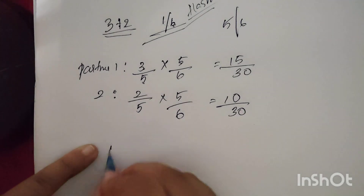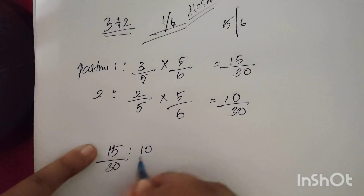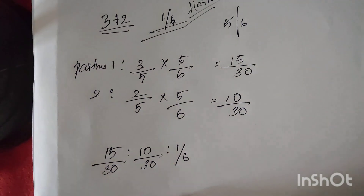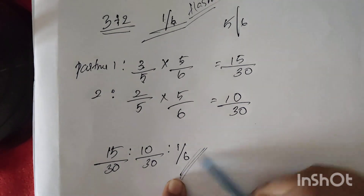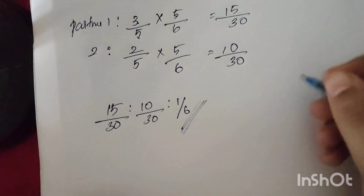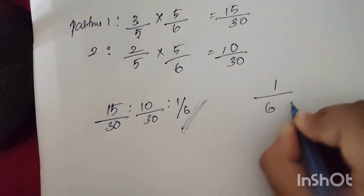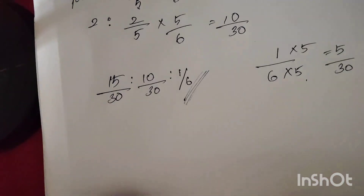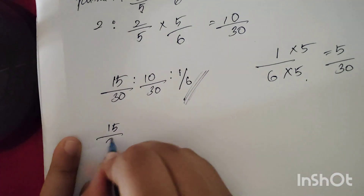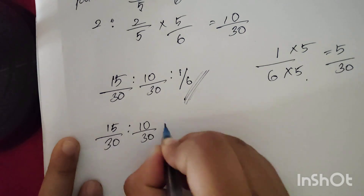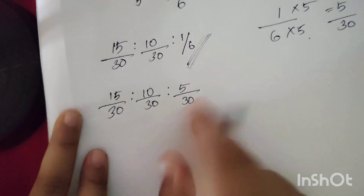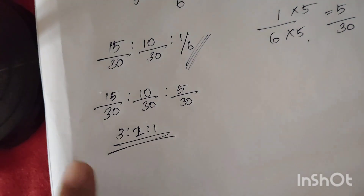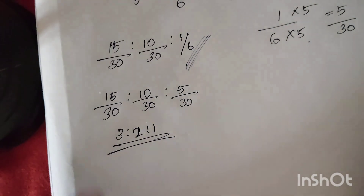We change the denominator. 1/6 multiplied by 5 gives 5/30. So the new ratio is 15 by 30, 10 by 30, and 5 by 30. Simplifying: 15:10:5 becomes 3:2:1. So the new profit sharing ratio is 3:2:1. That is the answer.